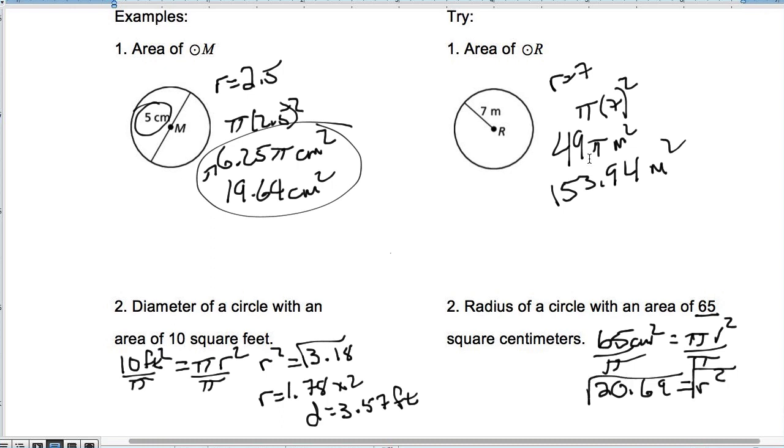Take the square root of that. So we'll plug that in our calculator. And we end up with a radius that is 4.55 centimeters. Now, I'm stopping there because I'm asking for the radius, not the diameter. All right, let's take a little bit further down.